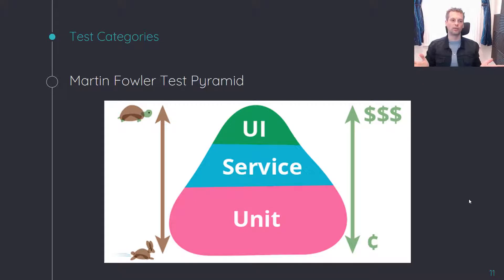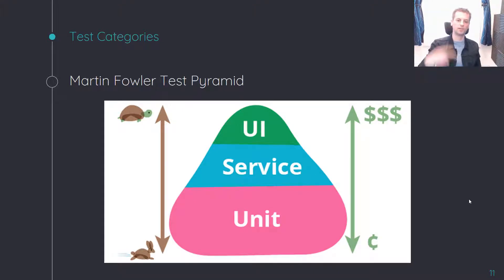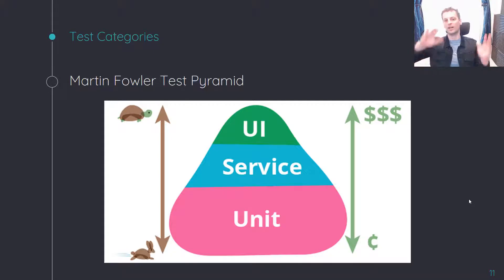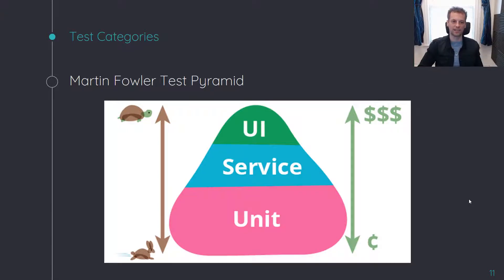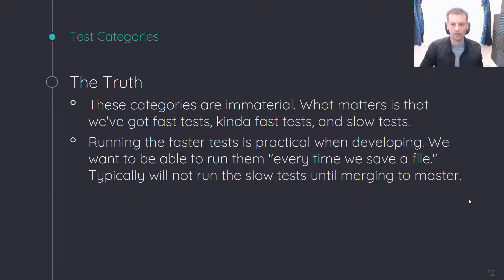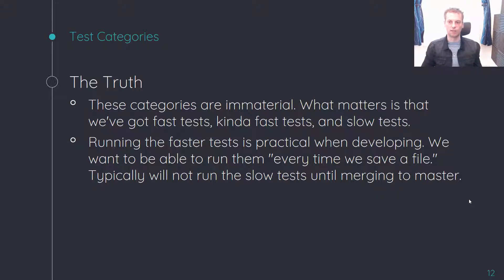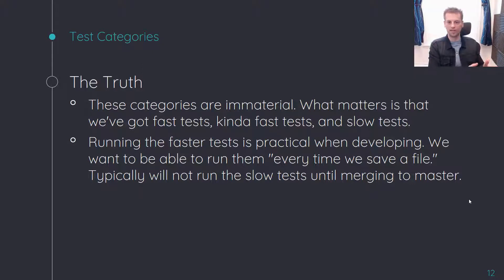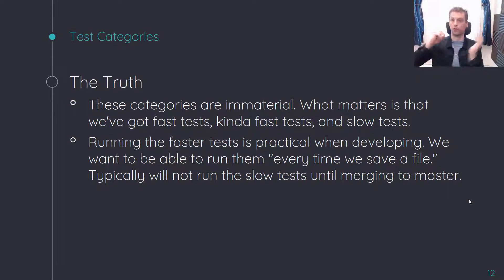For reference, Martin Fowler is a fan of the test pyramid. What I just called end-to-end tests he called UI tests — shown with a little turtle on the left, indicating they are slow and expensive. Service tests are the integration tests. Unit tests are fast and cheap. In reality, what matters is that we have some tests that run really, really fast and another set that run really, really slow.